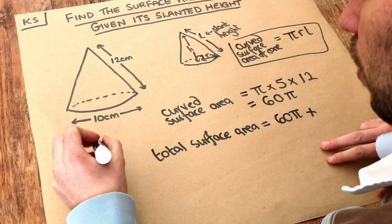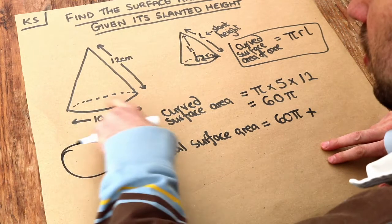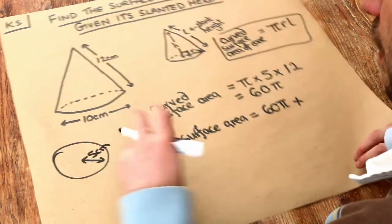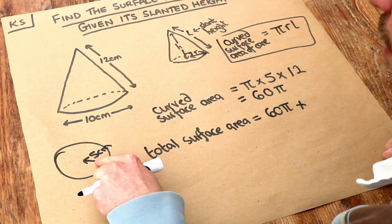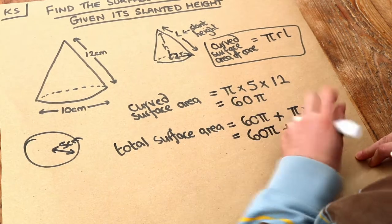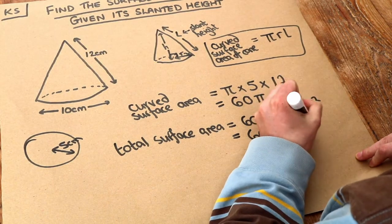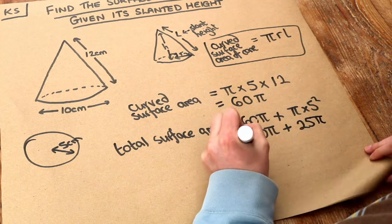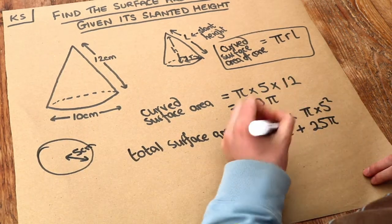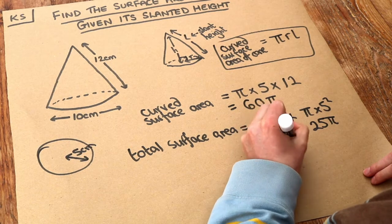What's the area of the bottom? We have a circle with radius 5 centimeters. The area is π × r², which is π × 5² = 25π. So we have 60π + 25π = 85π in total.